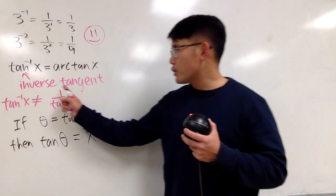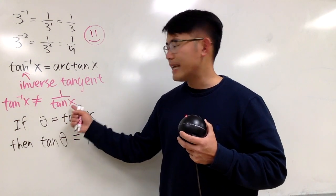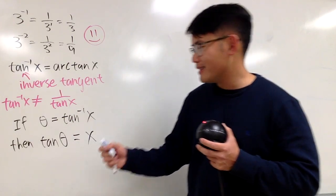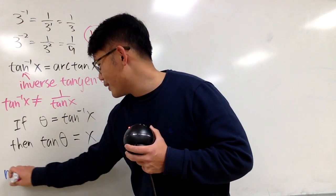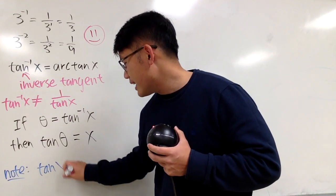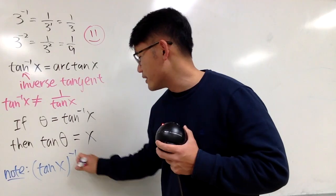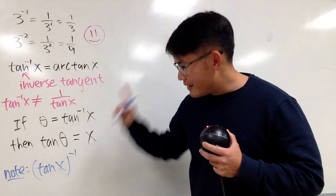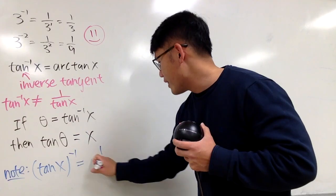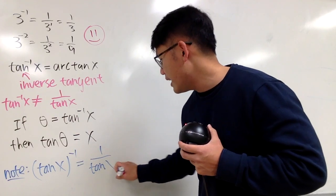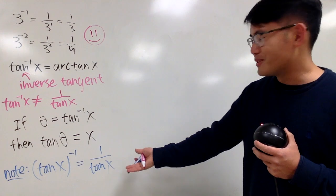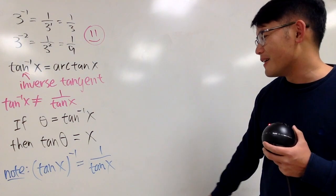And if you really want to say 1 over tangent x, then what you have to do is, let me put down a note right here. You really have to write tangent x, and you put a parenthesis with a negative 1 on the outside. Then this right here will be similar to this, which is the same as saying 1 over tangent x. This is okay. And of course, as you guys know, this right here is just cotangent, so that's okay.